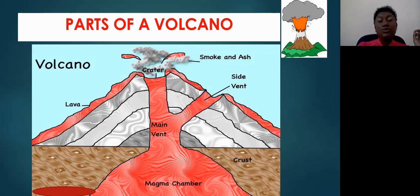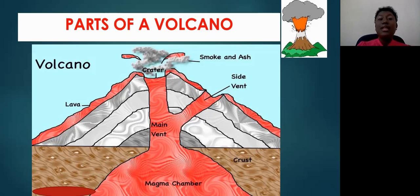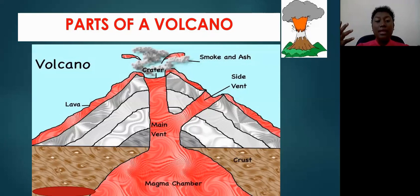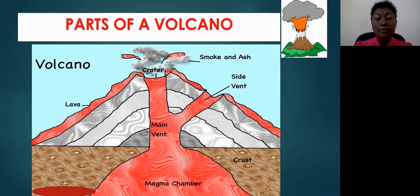If the volcano is an explosive one, then you can have an ash cloud that appears above the crater, filled with various volcanic debris, or what we call pyroclastic materials.